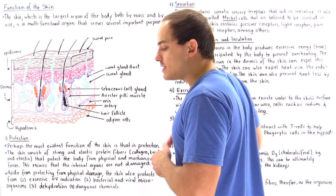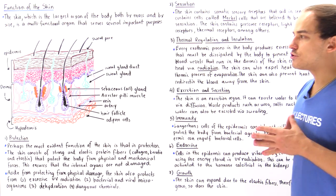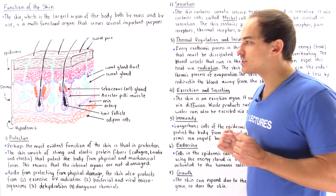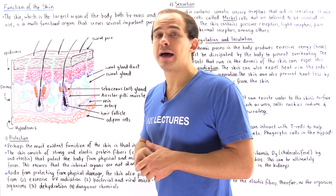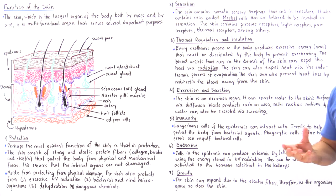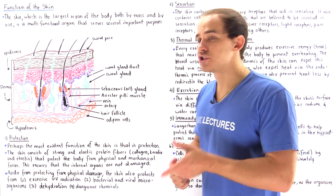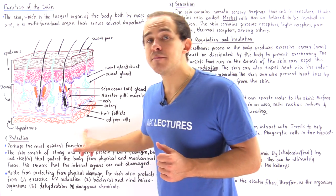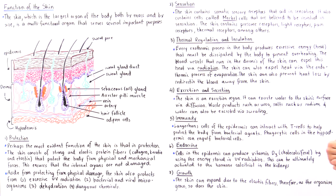Function number five is immunity. The epidermis contains Langerhans cells, which interact with T cells of the immune system to help protect us from bacterial agents. Additionally, the hypodermis — the subcutaneous layer — contains macrophages that can engulf bacterial cells.